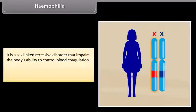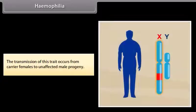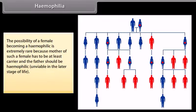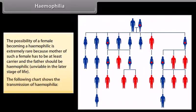Haemophilia is a sex-linked recessive disorder that impairs the body's ability to control blood coagulation. It is caused due to the deficiency of certain clotting factors. The transmission of this trait occurs from carrier females to unaffected male progeny. The possibility of a female becoming haemophilic is extremely rare, because the mother of such a female has to be at least a carrier and the father should be haemophilic. The following chart shows the transmission of haemophilia.